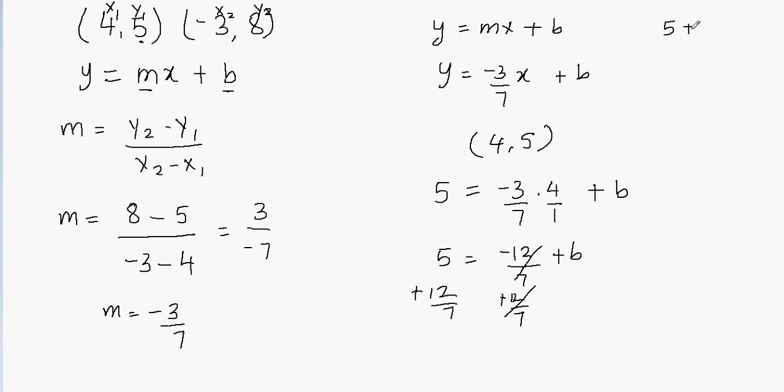5 plus 12 over 7 equals b. Now I can write this as 5 over 1, and since we have unlike denominators, we can multiply this fraction by 7 over 7. 7 times 5 is going to be 35, and then 7 times 1 will be 7, plus 12 over 7 equals b. Now 35 plus 12 will be 42 divided by 7 equals b, and 42 divided by 7 will be 6. So we can write that b equals 6.